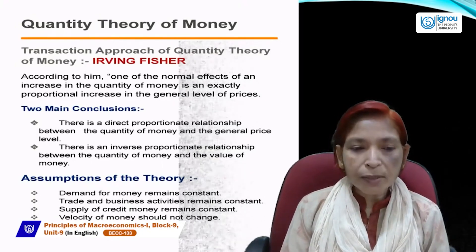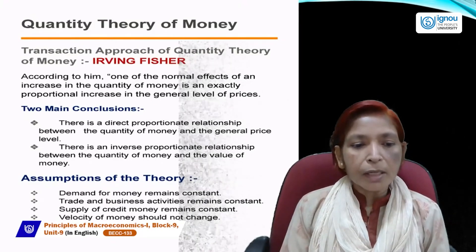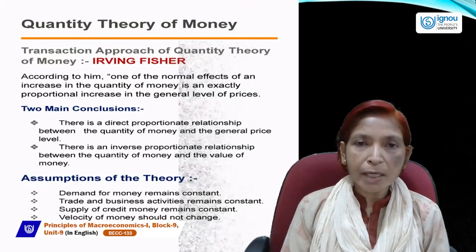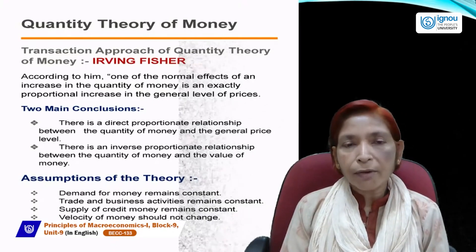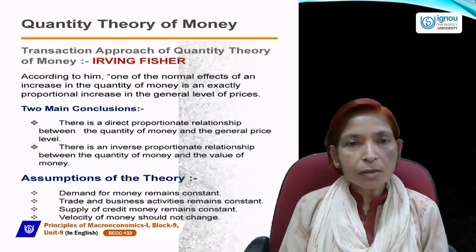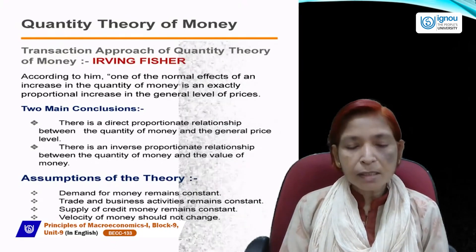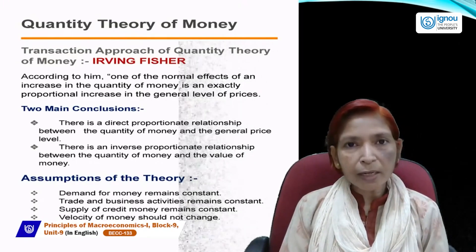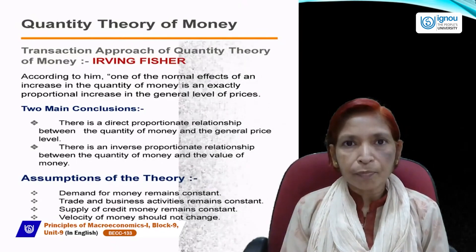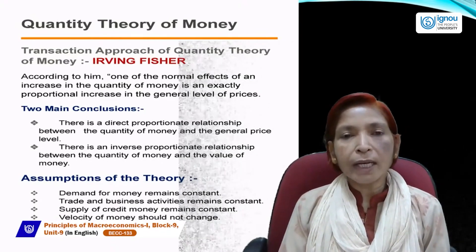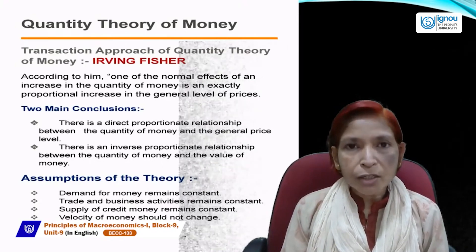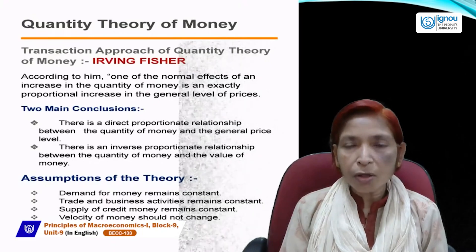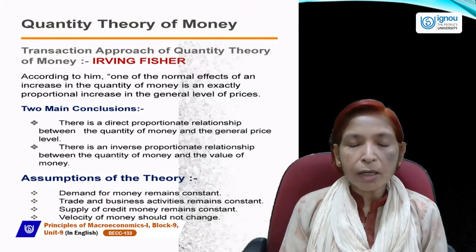Now, what are the assumptions of this theory? According to Irving Fisher: demand for money remains constant; trade and business activities should also remain constant; supply of credit money remains constant. Velocity of money — which tells us the speed at which money circulates in the economy — should also remain constant.